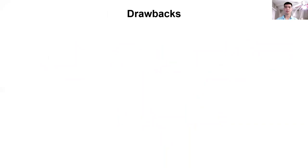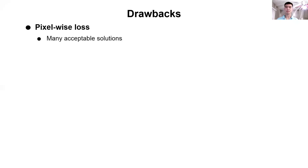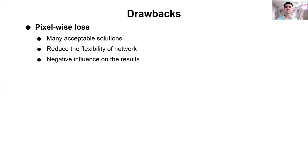Generally, the deep learning approaches I discussed here have two main drawbacks. First, most of these techniques use a pixel-wise loss to perform the training. Unfortunately, this problem is ill-posed, and there exists a large number of accepted solutions, especially for single-image SVBRDF estimation. So forcing the network to adhere to the ground truth will reduce the flexibility of the network and negatively impacts the results.